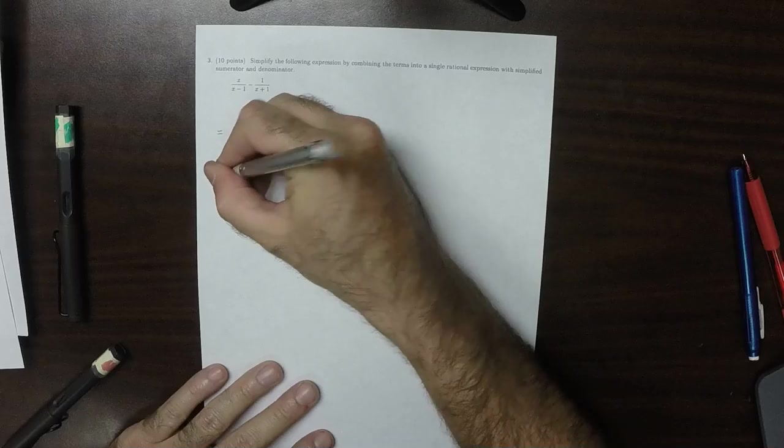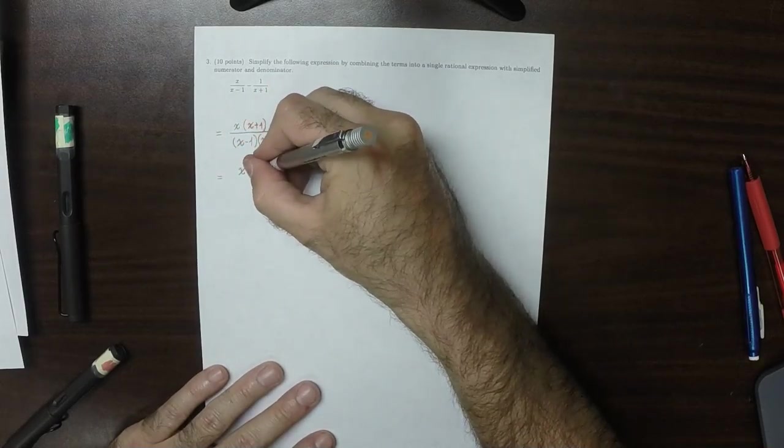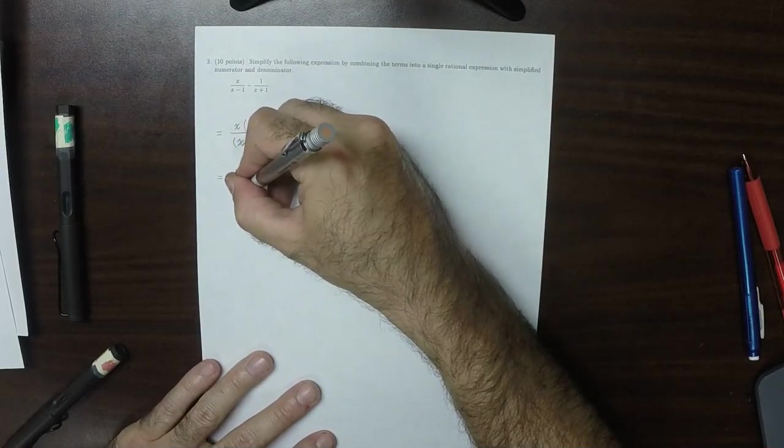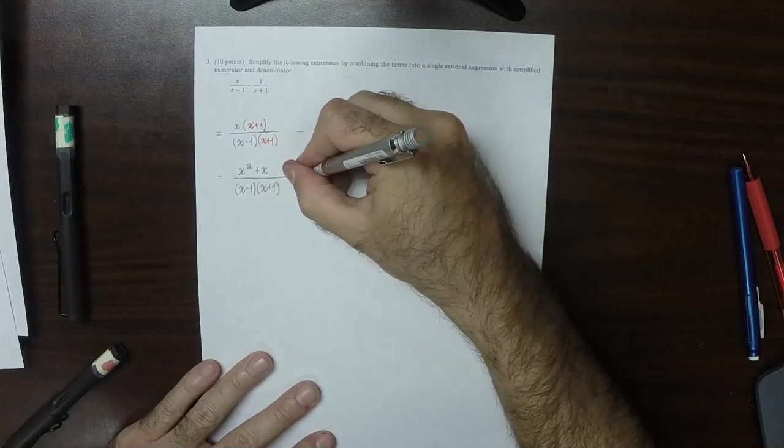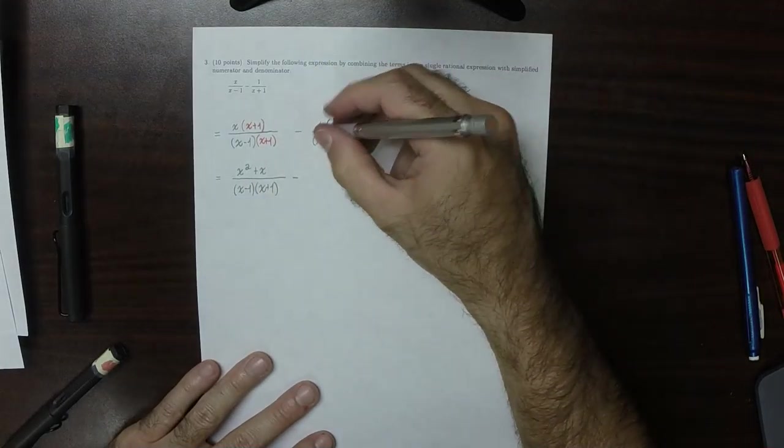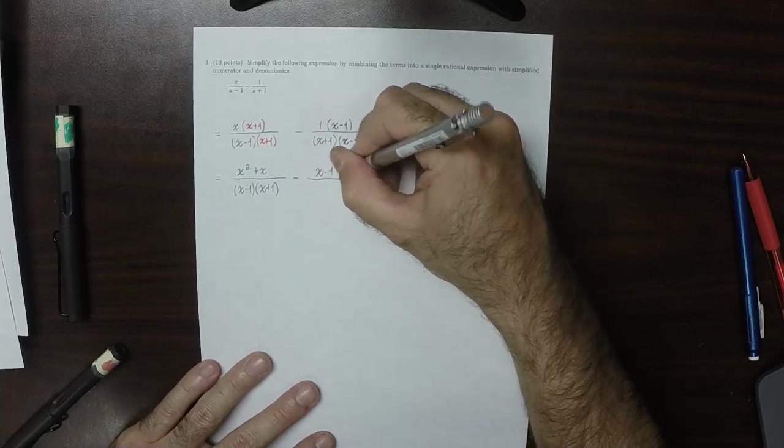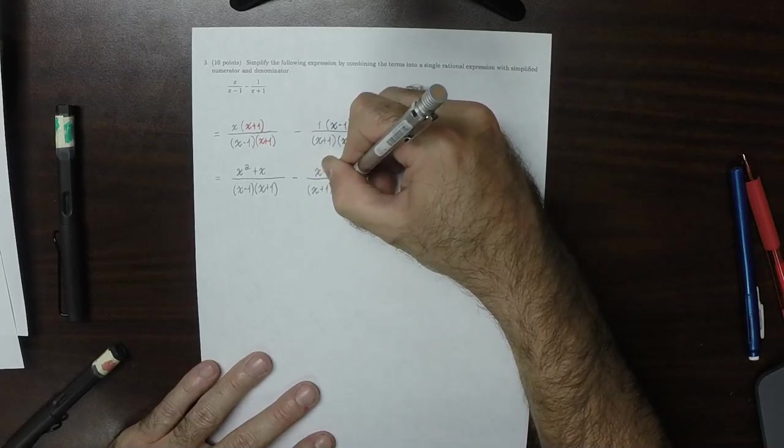So now I'll simplify the numerators. That would be x squared plus x over x minus 1 times x plus 1 and then minus just x minus 1 over x plus 1 times x minus 1.